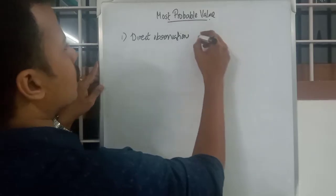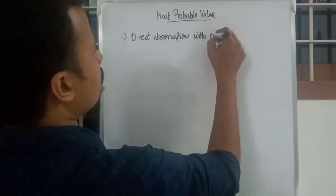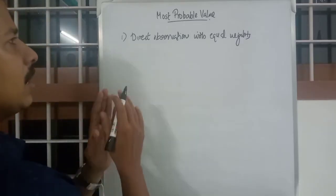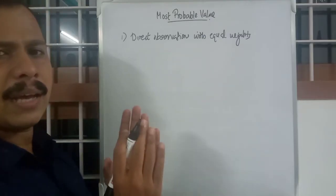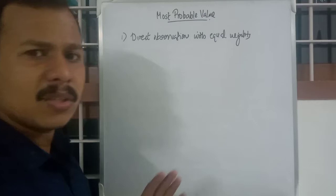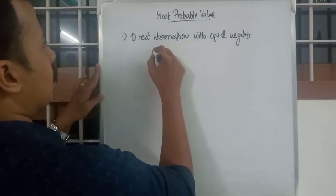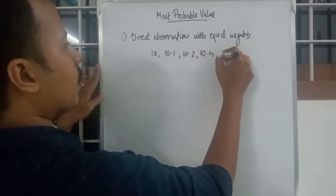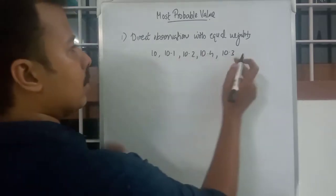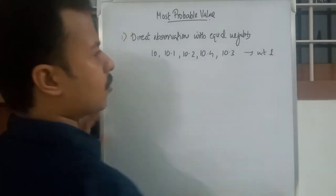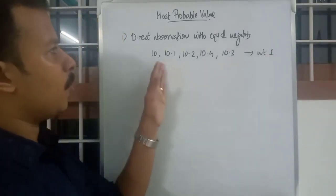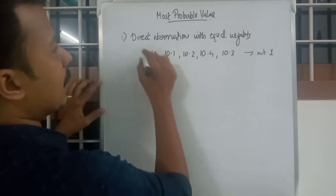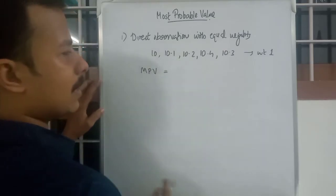The first case is direct observations with equal weights. Direct observations with equal weights means the weights are equal and measurements have no extra parameters — just the values. For example, the length of a desk: 10 meters, 10.1, 10.2, 10.4, 10.3, etc., and all values have weight 1 or weight 2 — any uniform value for each measurement.